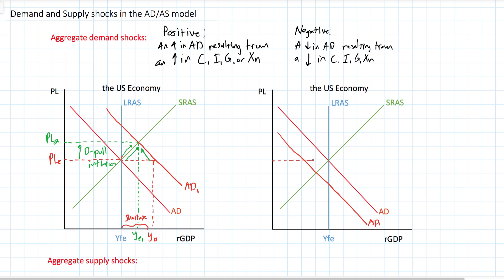If the price level remains at the original level of PLE, there would be a disequilibrium: the quantity of output demanded, YD, would be less than the quantity of output supplied, resulting in a surplus of goods and services. To restore equilibrium, the equilibrium price level must fall, leading to an increase in the quantity of output demanded by households, firms, the government, and foreigners, and a decrease in the quantity of output supplied. We see a new equilibrium at PL2 and a new equilibrium level of output at YE1.